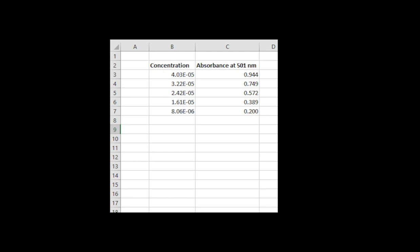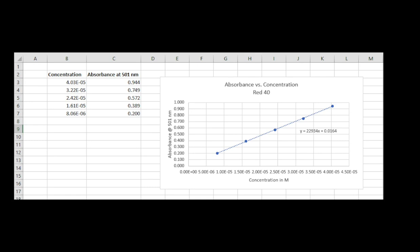Using the concentration and absorbance columns, you can create a graph of your data. By adding the trendline and its equation, you will have the information you need to use Beer's Law.